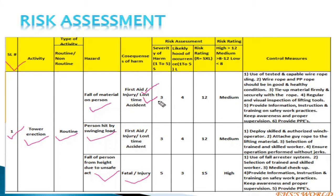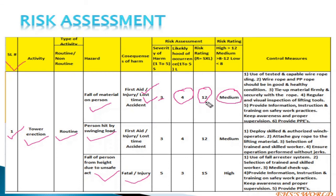After consequences, we go to severity of harm. For falling object from height, severity is 3 and likelihood is 4, so risk rating equals 3 multiplied by 4 equals 12 — that is medium risk. For person hit by swinging load, severity is 3 and probability is 4, so 3 multiplied by 4 equals 12 — also medium risk.